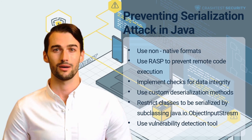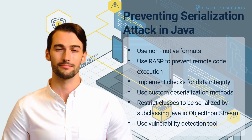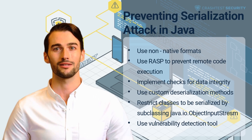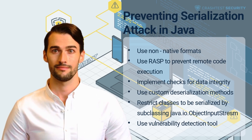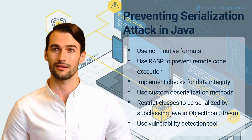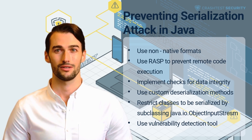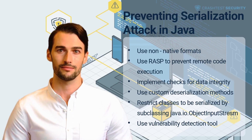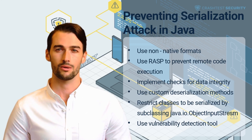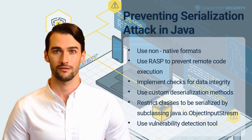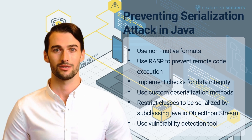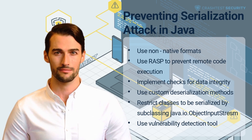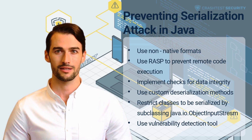Restrict classes to be serialized by subclassing java.io.ObjectInputStream: The java.io.ObjectInputStream class deserializes objects whose security can be hardened by subclassing them. This is achieved by overriding the resolveClass call, which restricts the classes that can be deserialized. Security teams can also deploy an agent that secures all usage of the java.io.ObjectInputStream class to harden applications against unknown malicious data types.